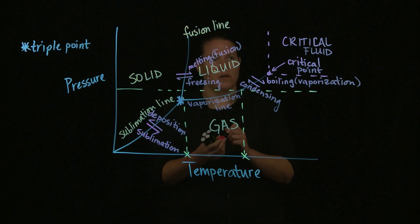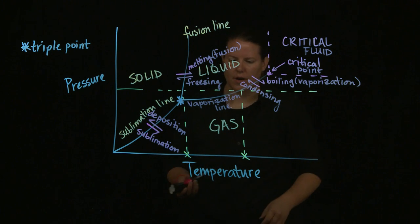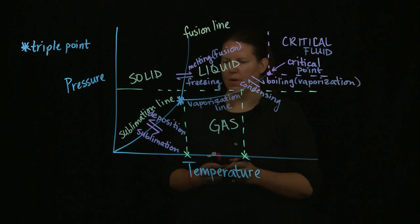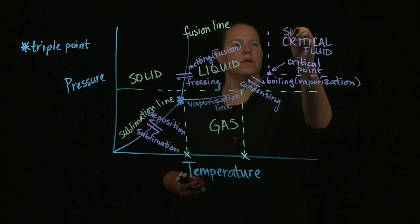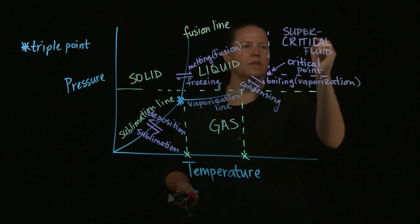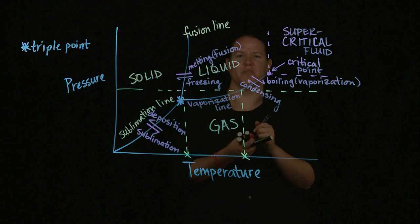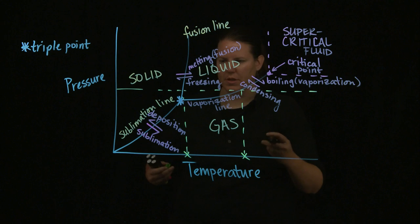In terms of those points, we got those points labeled. We need to figure out what these two pieces on the bottom are. Actually, I lied. I think there was a super in here. This is often sometimes called a critical fluid, sometimes it's called a supercritical fluid. I like the supercritical fluid. Kind of makes me happy.